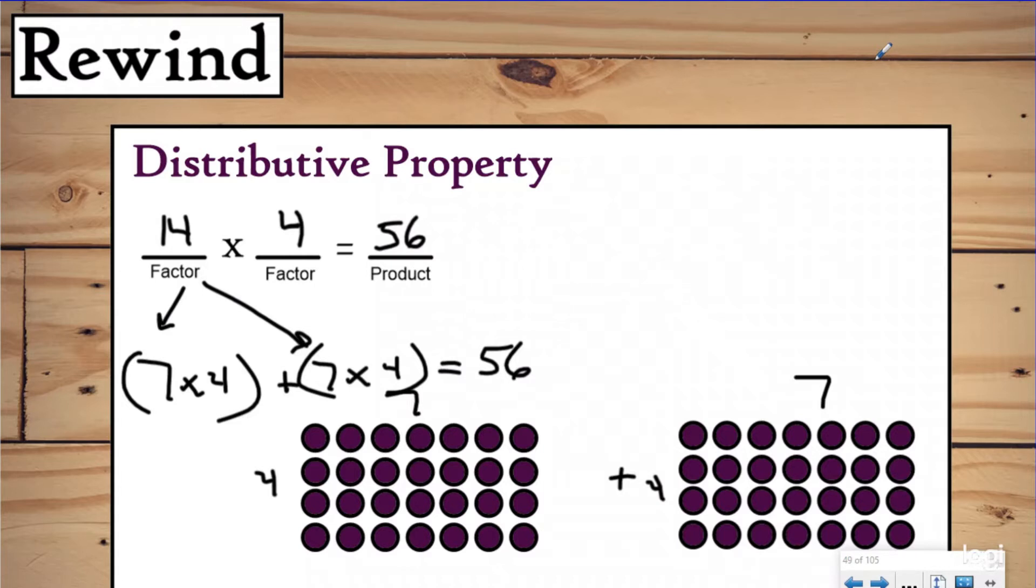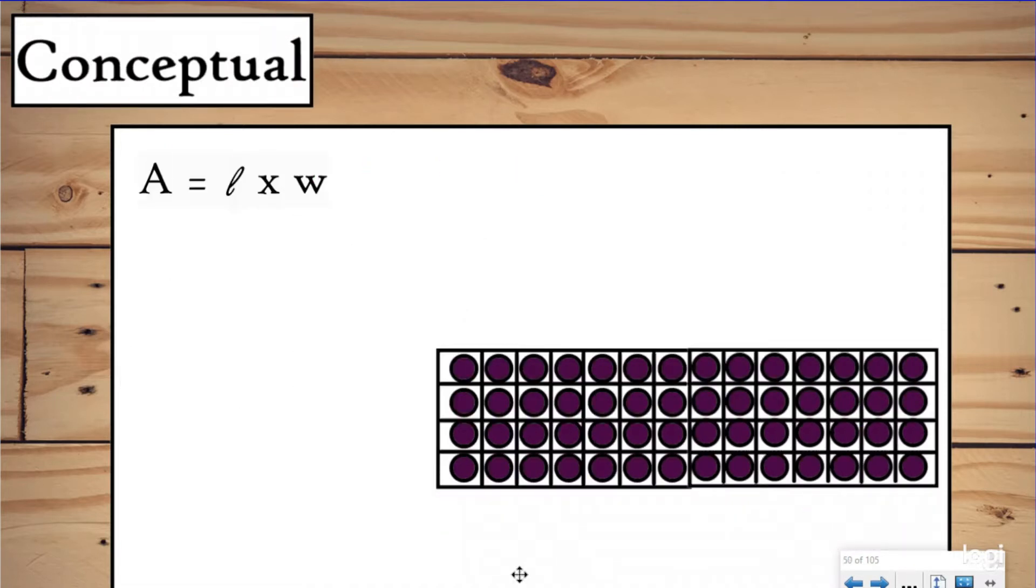So that's the distributive property. You learned that a long time ago when you learned about multiplication. You can split up factors, you can decompose them into two separate groups, because multiplication really is just repeated addition. Well, because we know that area is just really in finding an array, we can do the same thing with area.